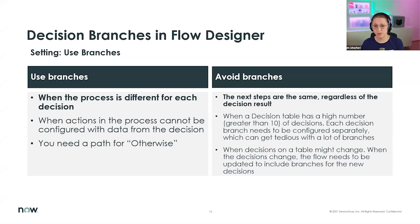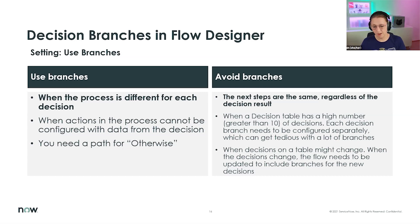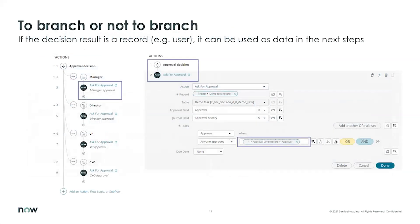If the process is generally the same regardless of the decision result, or you have a high number of decisions that might change later, try to avoid branches. This lets you configure the following process once and have it work for all result paths. You also won't have to touch the flow again if the decision table changes — for example, if you add another row or result option. Keep it as simple as possible unless you absolutely need to branch.